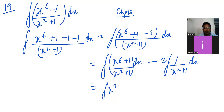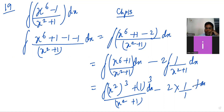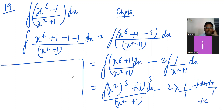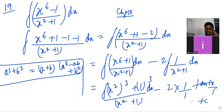So x⁶ can be written as (x²)³, that is x square whole cube, divided by x² + 1. The second part gives (1/1) tan inverse of x upon 1 plus c. Now we will use the formula a³ + b³, which equals (a + b)(a² - ab + b²). So this is the formula we have to apply here.